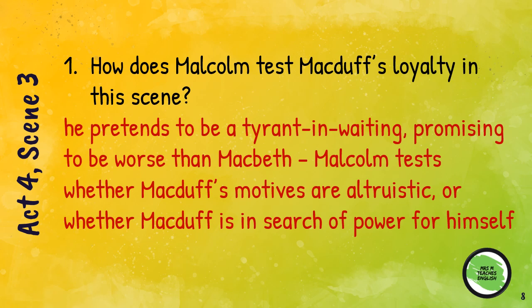Malcolm's behavior is confusing — it appears that he is toying with Macduff, pretending to be a worse prospect as king of Scotland than Macbeth ever was. Malcolm is really just testing Macduff here. He needs to know whether he can trust Macduff, as he doesn't know if Macduff is a spy acting on Macbeth's behalf, or if he has designs on the throne of Scotland himself.